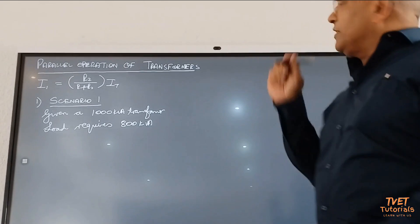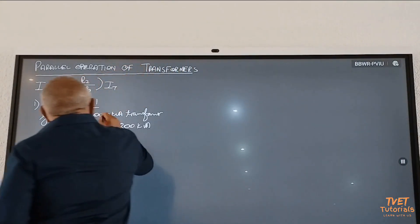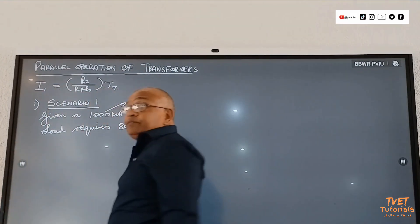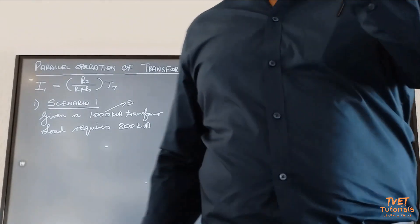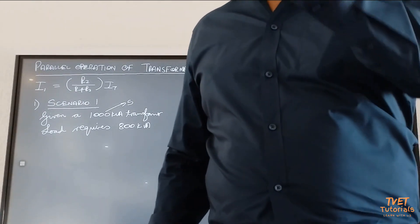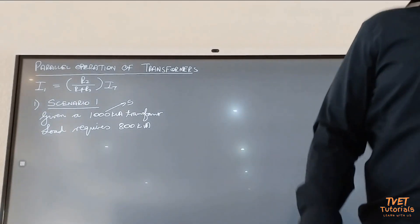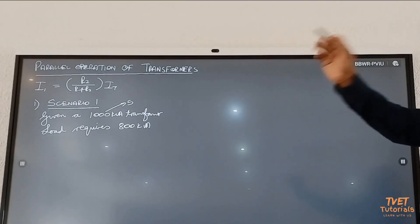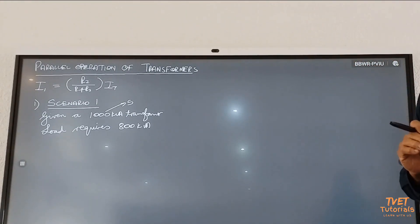When we look at a question like this, what do we call this information? What symbol do we use for this? S. What is S? In terms of transformers, it represents full load output. So when this transformer is working at full load, what is it giving out to the load? A thousand.